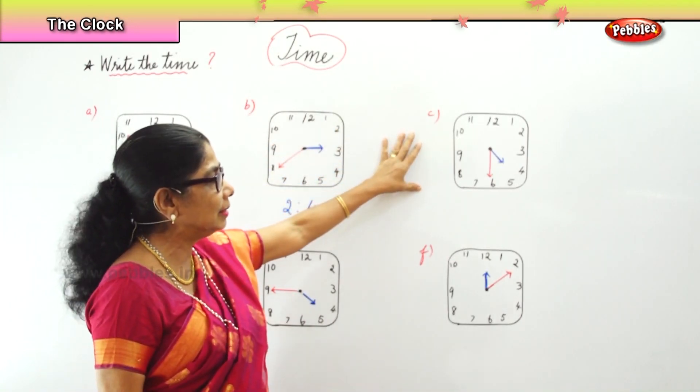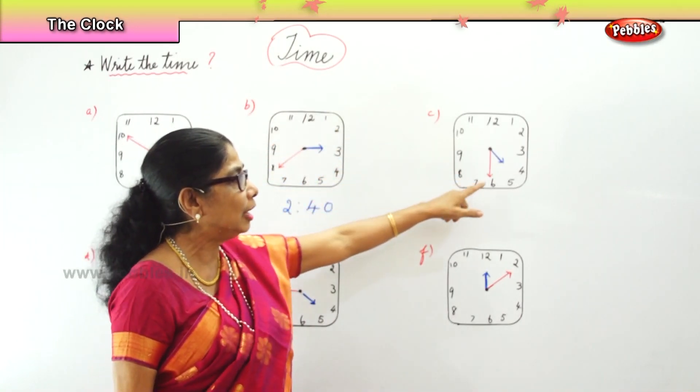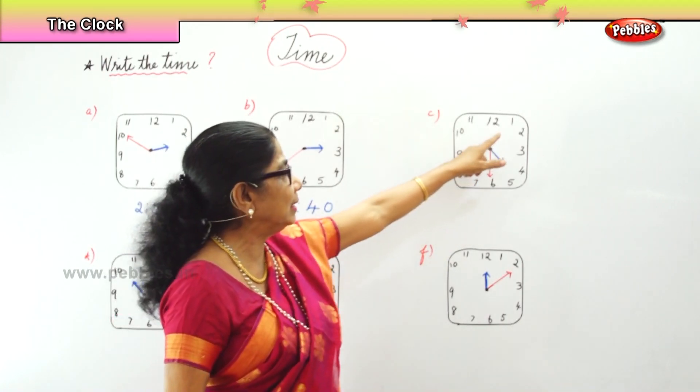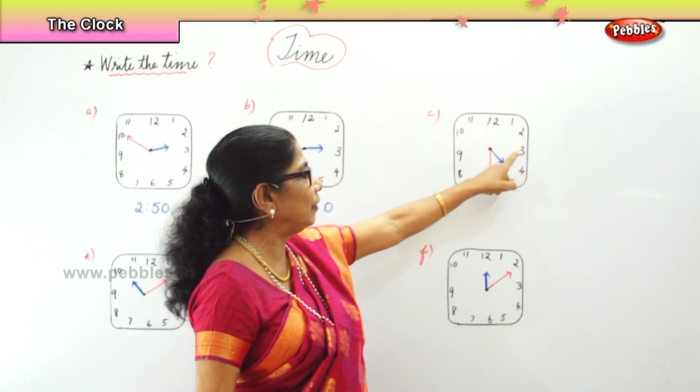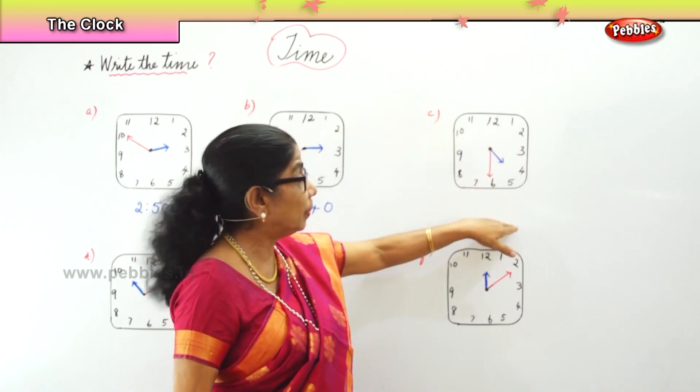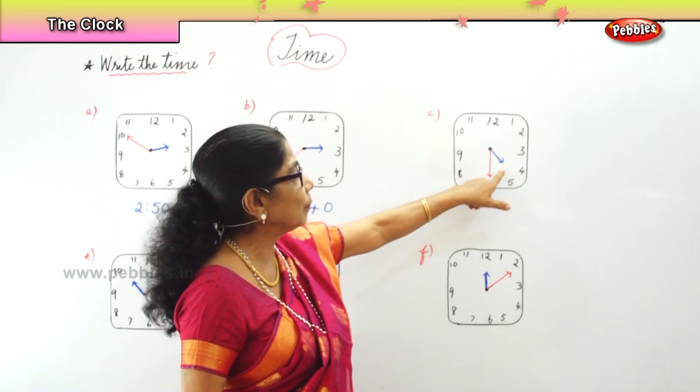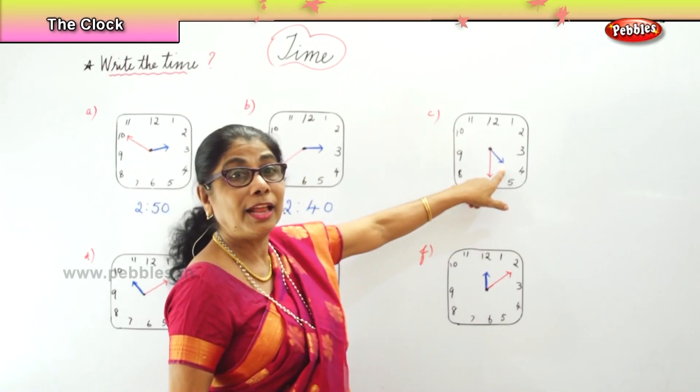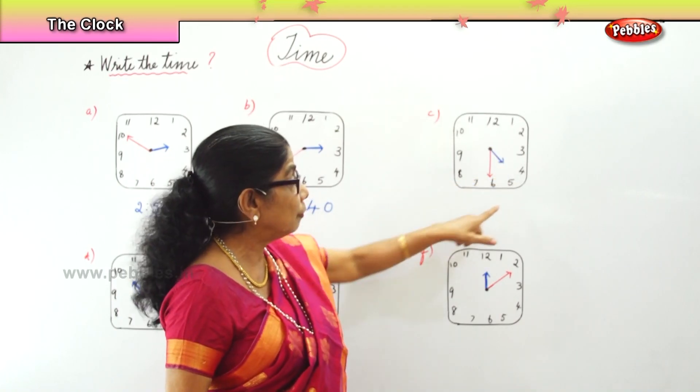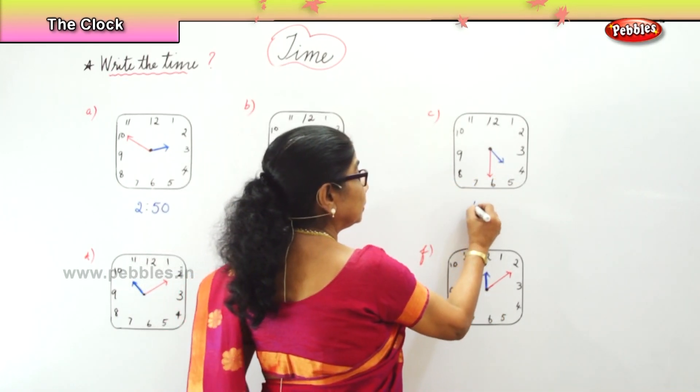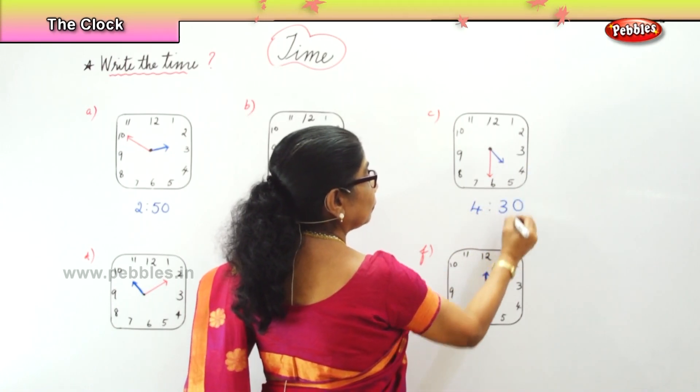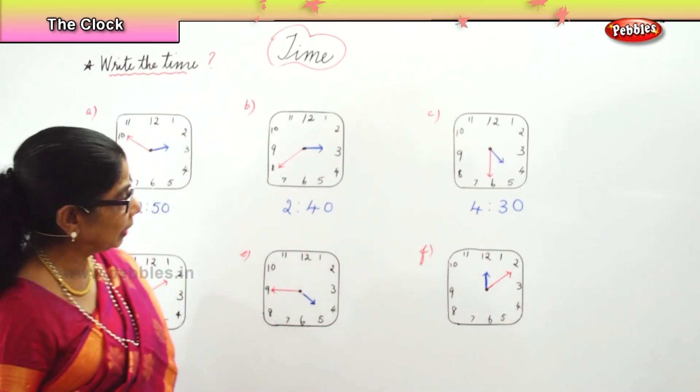Now just look at the third clock face. You have the hour hand between four and five, the minute one on six. Six means five, ten, fifteen, twenty, twenty-five, thirty. Half hour, thirty minutes. That is you will say four hours past thirty minutes. Four hours past thirty minutes, that is four thirty.